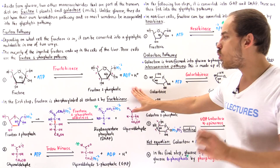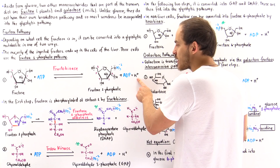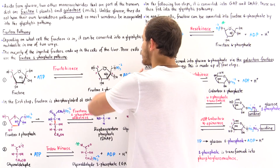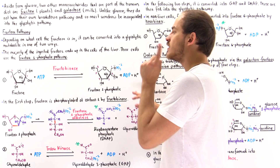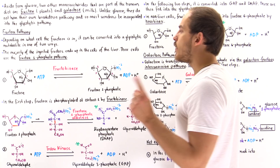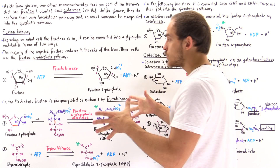We also form ADP as well as H+. The purpose of step 1 is to destabilize this molecule — once we add that phosphoryl group, it destabilizes fructose. In the next step, we can cleave the molecule into two three-carbon molecules. So fructose is phosphorylated at carbon 1 by fructokinase, which destabilizes it and also traps that fructose in the cell.